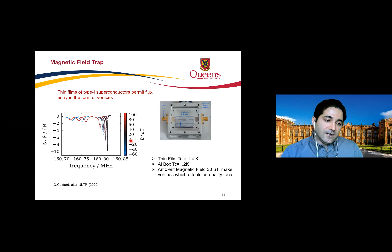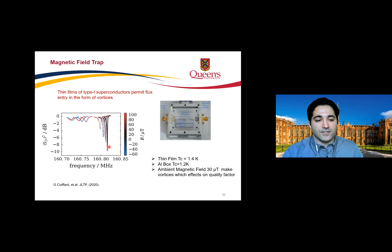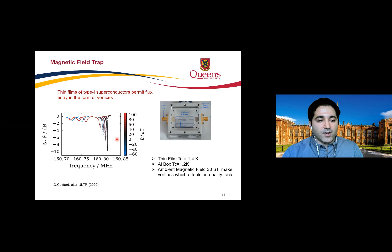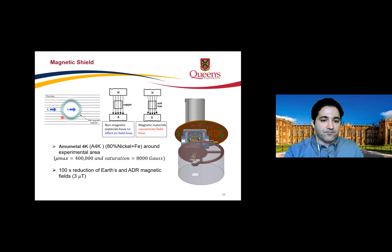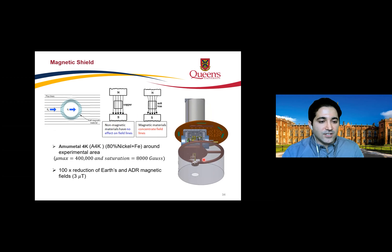Because we were affected by the ADR magnetic field, we developed a magnetic shield. Soft magnetic metals redirect magnetic field lines because of their lower magnetic reluctance — the field prefers to travel through the shield rather than through the experimental area. We used a metal called Metglas 4K, an alloy containing about 18% nickel and iron, with a relative permeability of around 400,000.